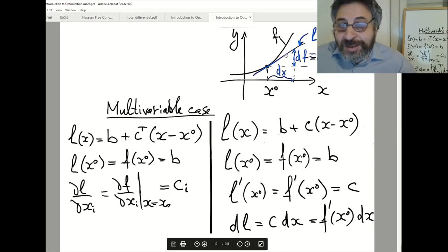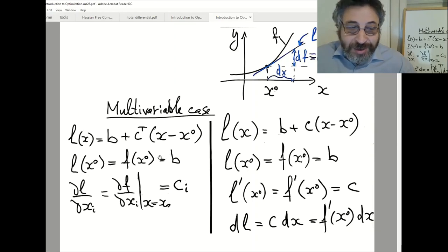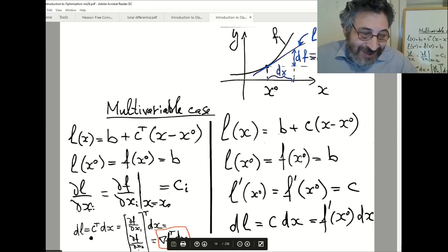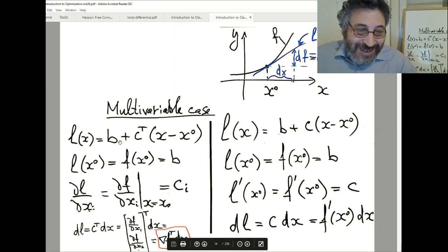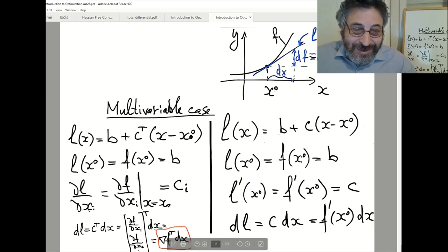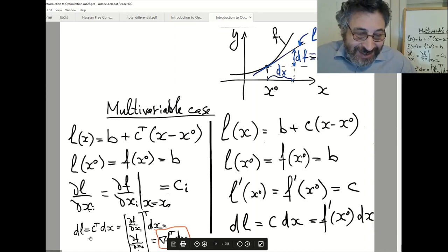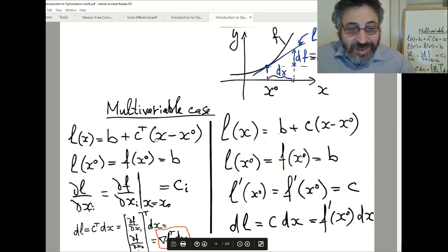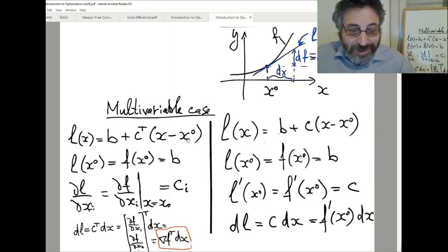But what I say is that df is increment of my linear function. And linear function has this expression. So I can write down increment of this linear function. If this is expression of l, it's easy to see that dl is just c transpose multiplied by dx. And that's how much is shifted from the point x node.